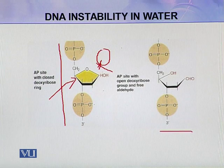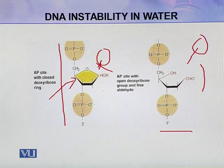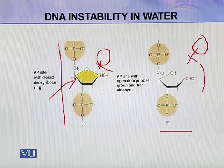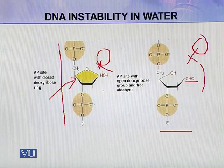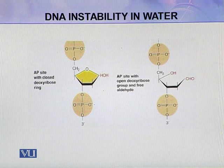One AP site has a closed deoxyribose ring. In the other example, the AP site has an open deoxyribose ring with a free aldehyde group present. This free aldehyde group is very dangerous for the DNA molecule.